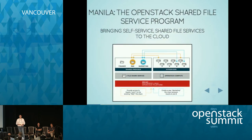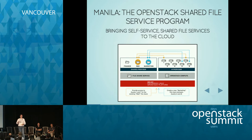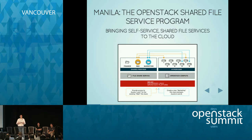One thing to note is that, unlike Cinder's block volumes, Manila has a networking component. You have to think about how shares are exported into tenant-specific overlay networks. If you create a particular Neutron network, you may want to export a shared file system only to that network. There's additional plumbing required behind the scenes to ensure the storage providing the shared file system can access the Neutron or Nova network, maintaining a secure connection for both clients and the provider.